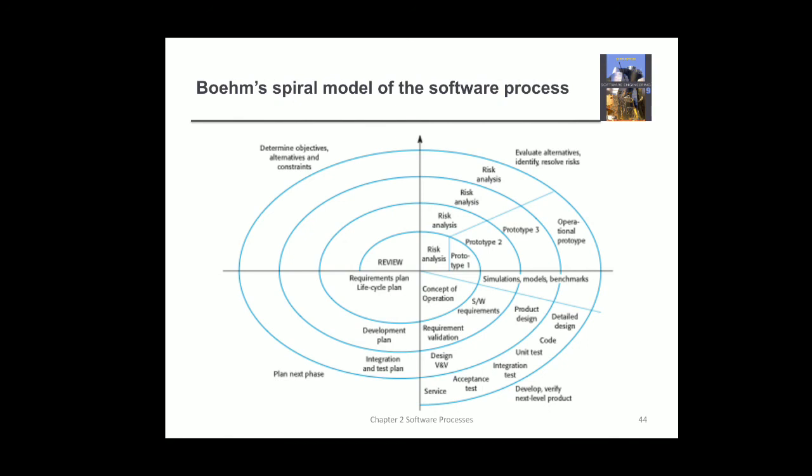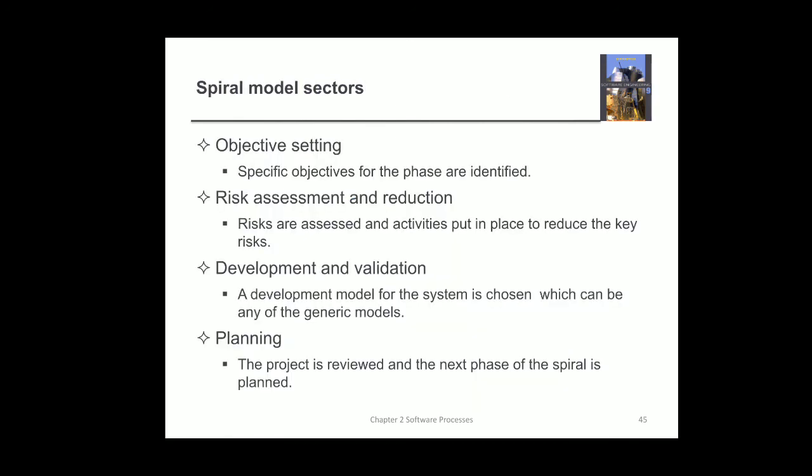This is how a Boehm spiral model works. There are four sectors: objective setting, risk assessment and reduction, development and validation, and the planning phase. In objective setting, specific objectives for the phases are identified. In risk assessment and reduction, risks are assessed and activities are put in place to reduce key risks — if a risk is found, we analyze it and identify the solution. Then in development and validation, actual development and validation of the system takes place. In the planning phase, the project is reviewed and the next phase of the spiral is planned.